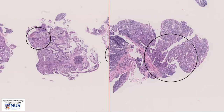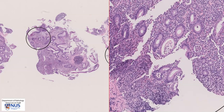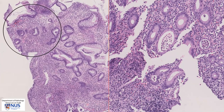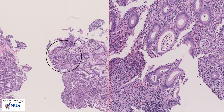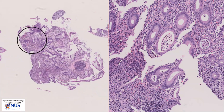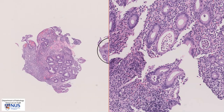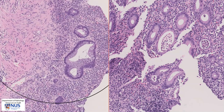We are now looking at the two cases side by side. In summary, these are examples of ulcerative colitis and we have evidence of activity or active inflammation including crypt abscesses, cryptitis, and ulcer exudates. We also have features of chronic inflammation such as crypt architectural distortion, atrophy, branching, shortening of the crypts, and basal plasmacytosis. We do not see granulomas in these two biopsies, and the presence of granulomas may suggest the possibility of Crohn's disease, which is another common inflammatory bowel disease.